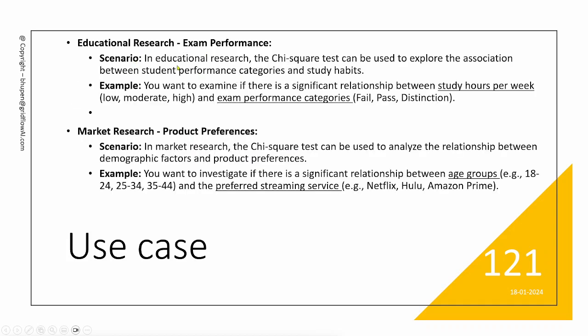Some more examples here. A scenario is educational research. And the chi-square test can be used to explore association between the student performance and the study pattern or study habit. For example, the study hours per week, low, moderate, high, and the performance outcome or categories can be pass, fail, and distinction. And if you would like to associate or find out association between these two categories, we use chi-square.